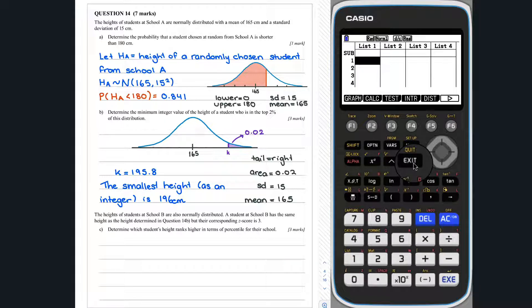So, we are now introduced to a different school called School B. We are told that a student at School B has the same height as the height determined in Question 14B. That was 196 centimetres. But the corresponding Z-score is 3. So, from this, we know that for the distribution of heights in School B, the height 196 centimetres has a Z-score of 3.